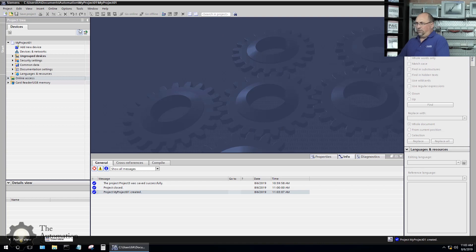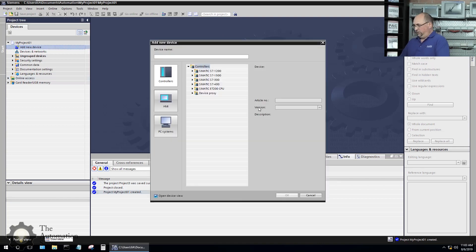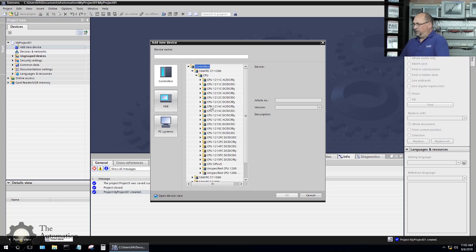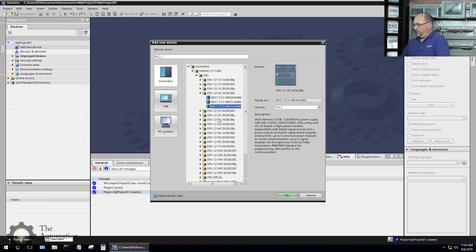And the first step here, I'm going to go to add new device. And I'm going to add my Siemens S7-1200. I have a 1212C that came in the starter pack. It's the AC/DC relay. So we'll choose that one there. That's the latest version. And click on OK.